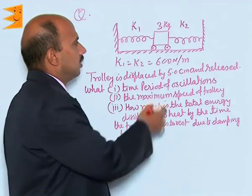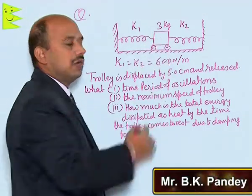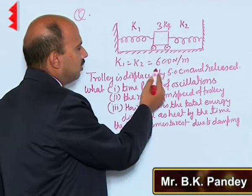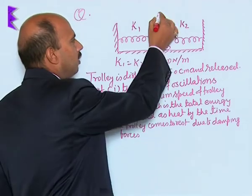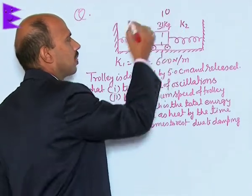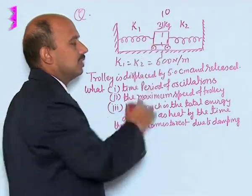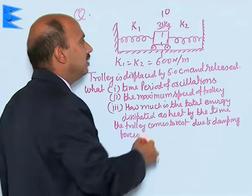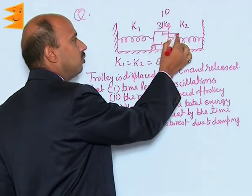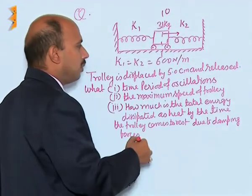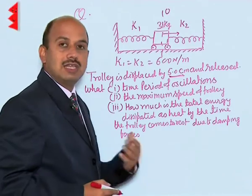Now, see in this question, there are two identical springs having spring constant k1 and k2. K1 is equal to K2 is equal to 600 Newton per meter. Now, this is the equilibrium position. These two springs are connected with the trolley of mass 3 kg and this trolley is displaced to one side, suppose by a displacement of 5 centimeter, and then it is released.